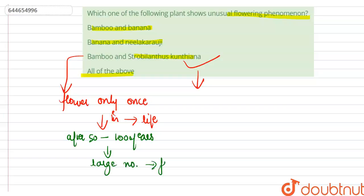Now strobilanthus kuntiana, which is also known as neelakarogi, also flowers once - flowers once in 12 years, and it marks the beginning of reproductive phase.